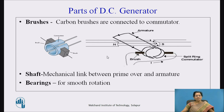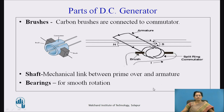The shaft is used as a mechanical link between the prime mover and the armature. When the prime mover rotates, the armature rotates and EMF is induced in the armature conductors. Bearings are used for smooth rotation.